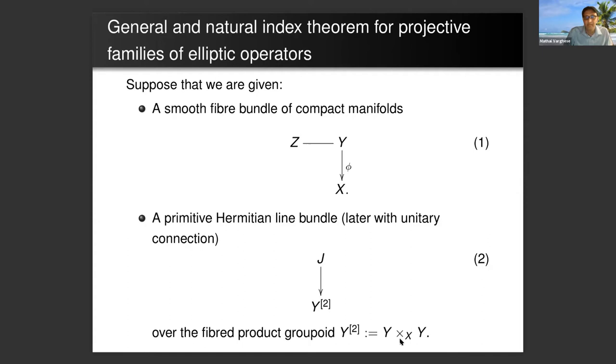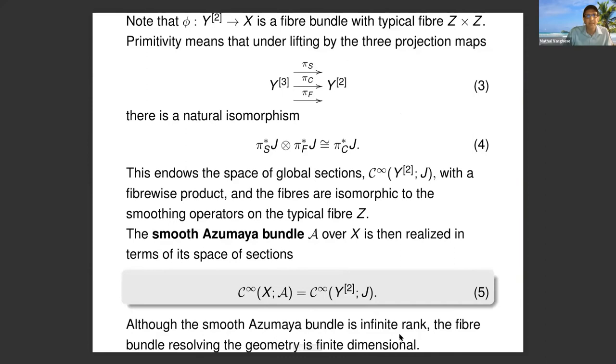This is just like the Atiyah-Singer families index. Again on Y we have a vector bundle V over Y, but here is some new data. You have a primitive line bundle J over the fiber product of Y with itself over X, so it's pairs of points which project to the same point in X. This fiber product of Y with itself is another fiber bundle over X with fiber Z cross Z.